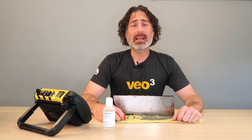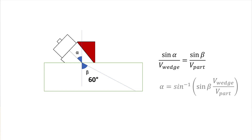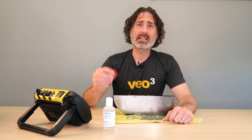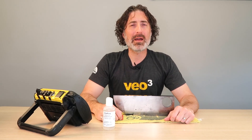If we want to generate a 60 degree shear wave in steel, we need to know what angle to cut the wedge at, and we can do that using Snell's law. We can isolate alpha on the left-hand side of the equation and start plugging in values on the right-hand side. The velocity of sound in this particular wedge, which is lucite, is 2796 meters per second — that's a little bit above the catalog value of around 2740, but it's not going to matter too much.